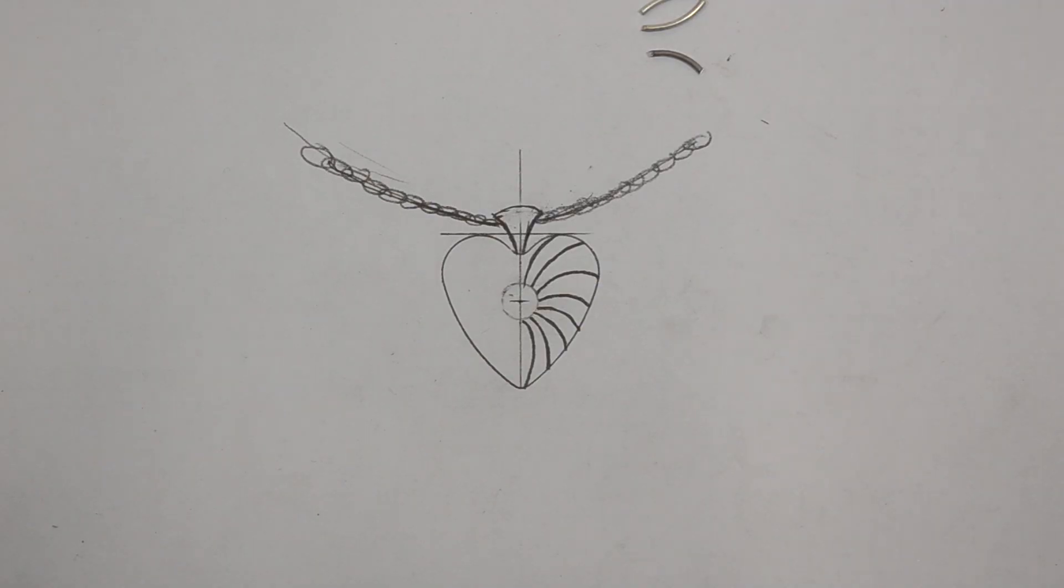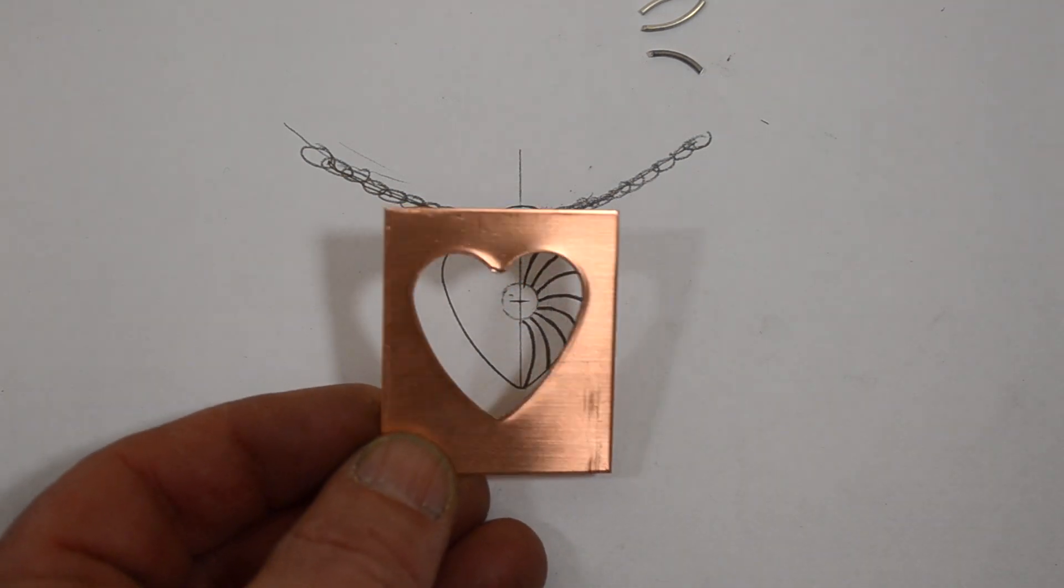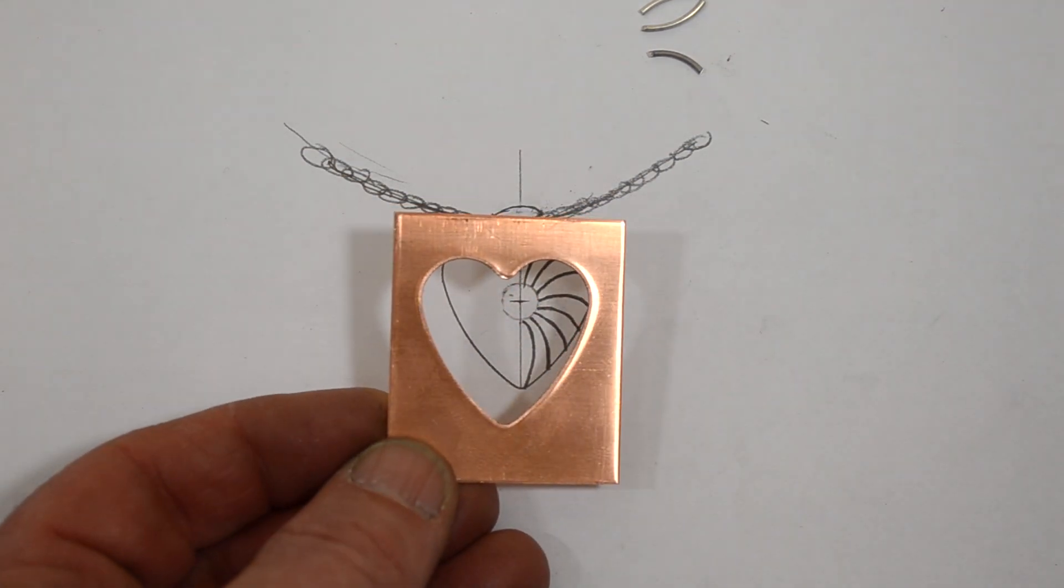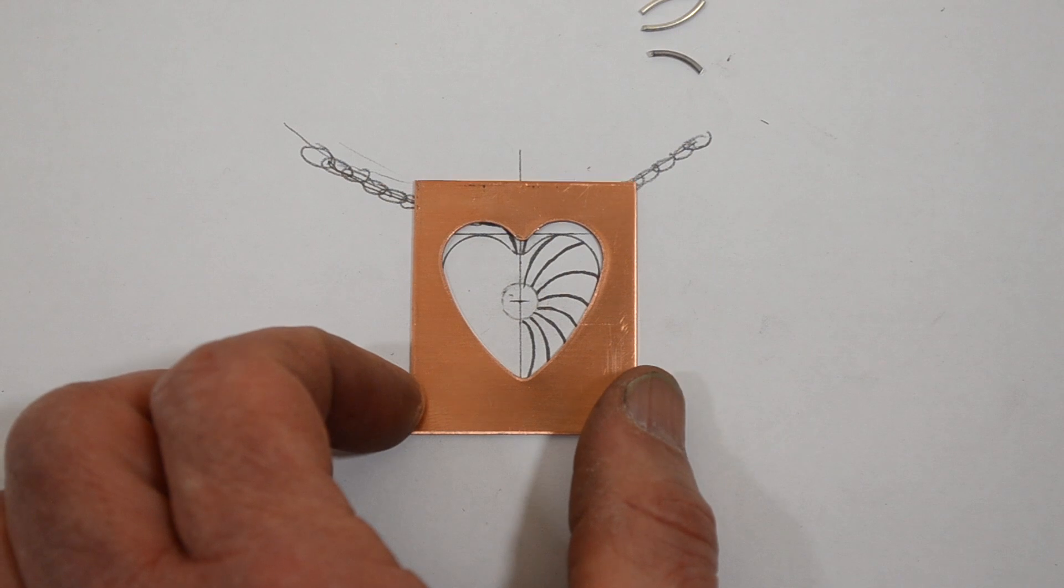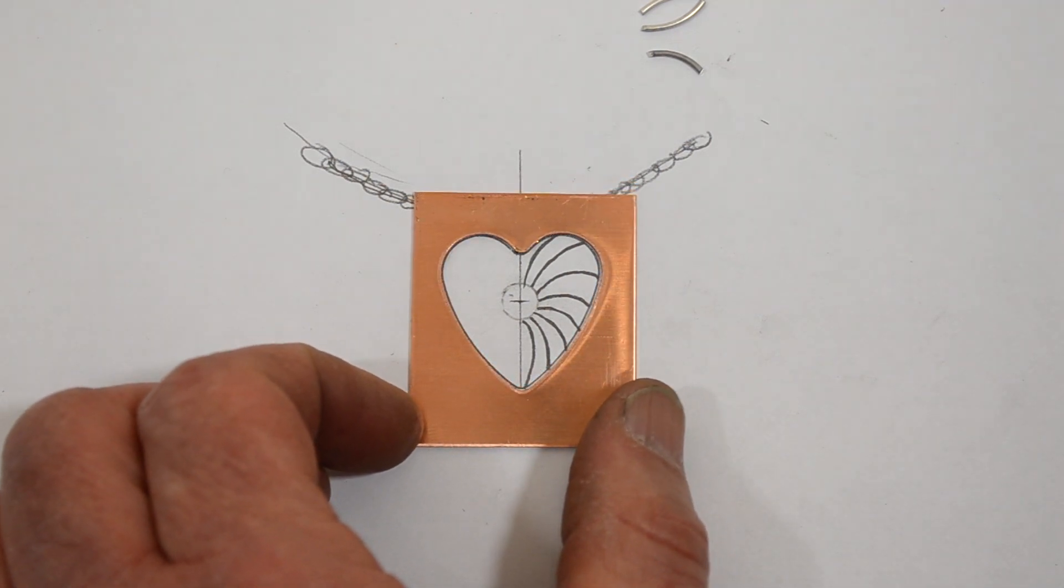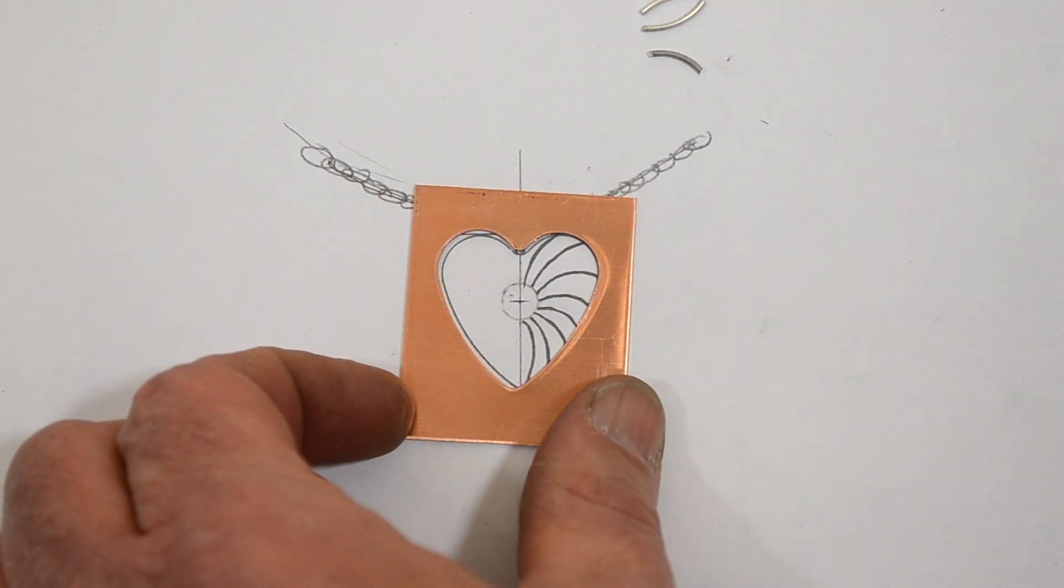Everything starts with a drawing. What's really nice about the Silhouette dies corresponding to the Swanstrom disc cutter of the same shape is that you can make templates, and these templates can help you not only to trace the shape but also lay out your design.